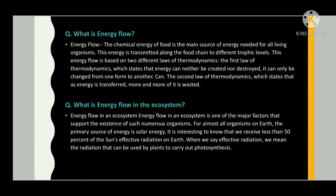What is energy flow? The chemical energy of food is the main source of energy needed for all living organisms. This energy is transmitted along the food chain to different trophic levels. Energy flow is based on two laws of thermodynamics: the first law states that energy can neither be created nor destroyed — it can only be changed from one form to another. The second law states that as energy is transferred, more and more of it is wasted.